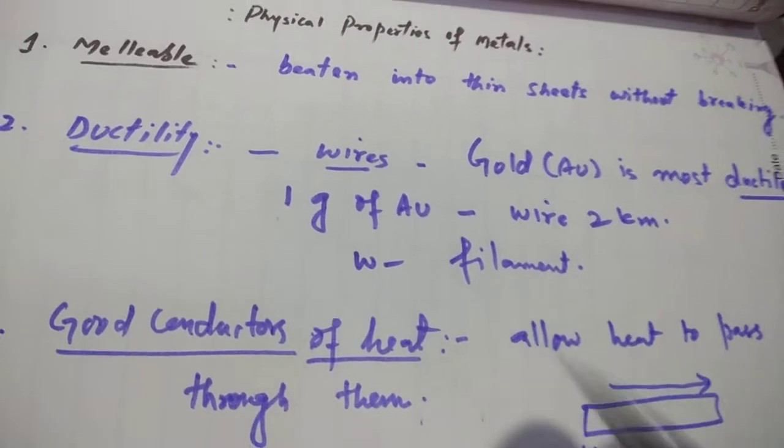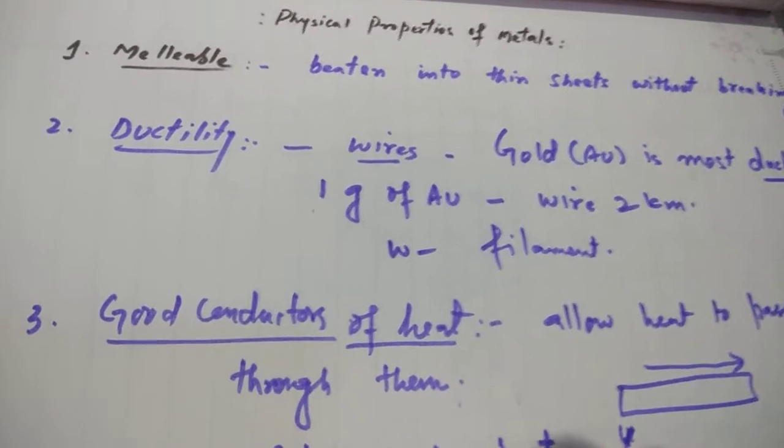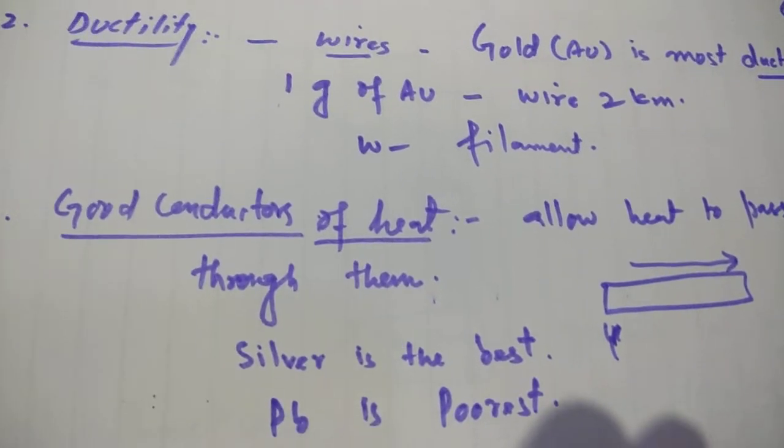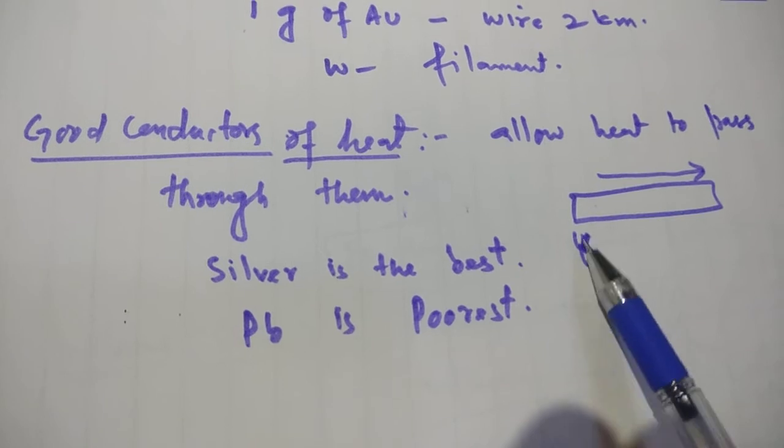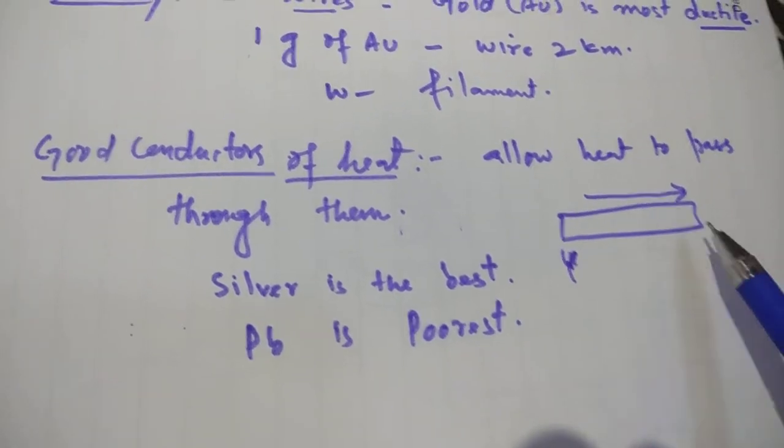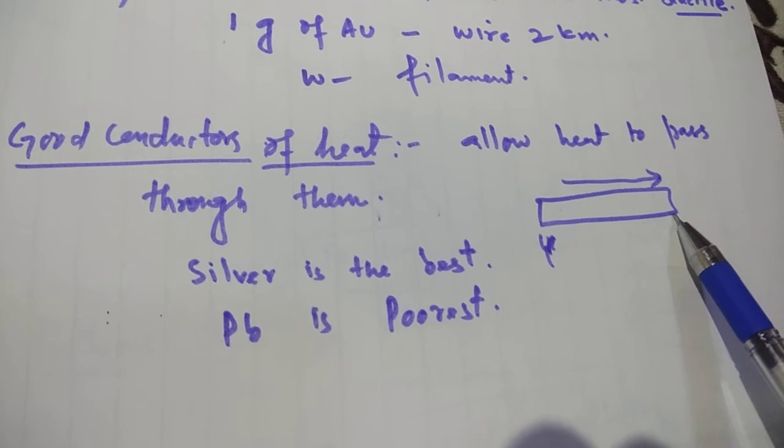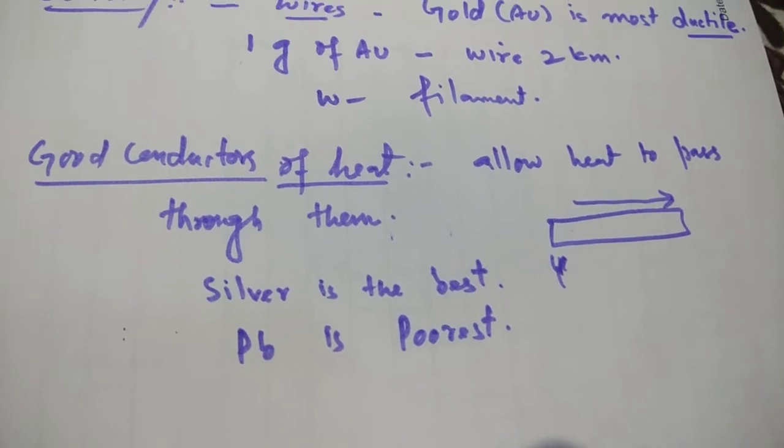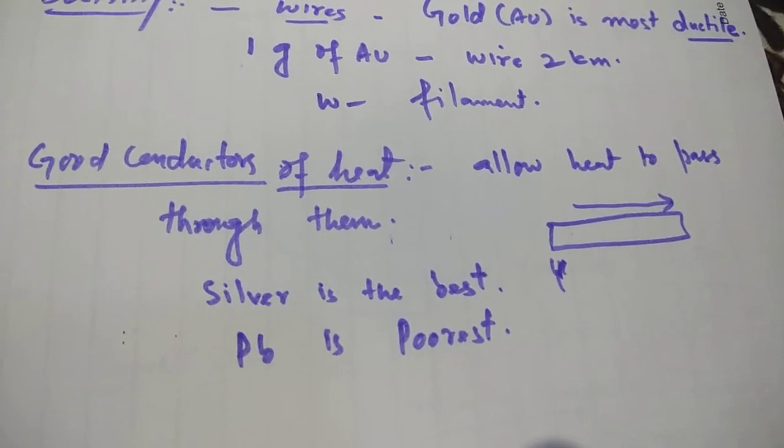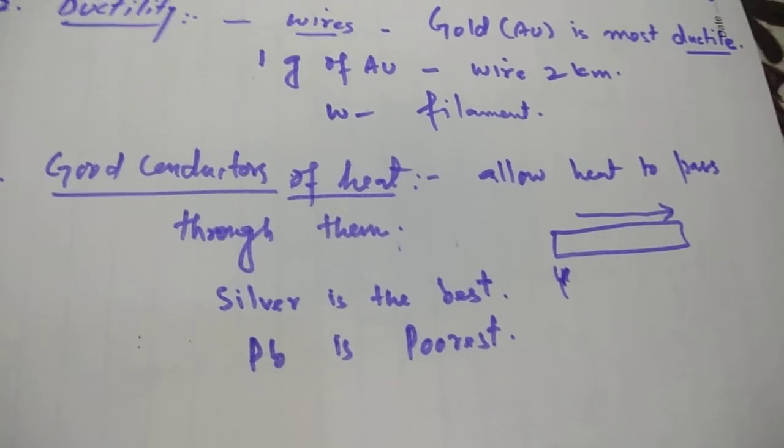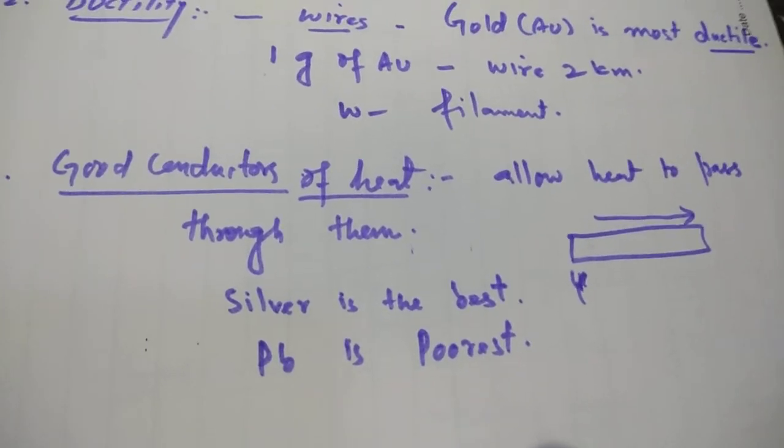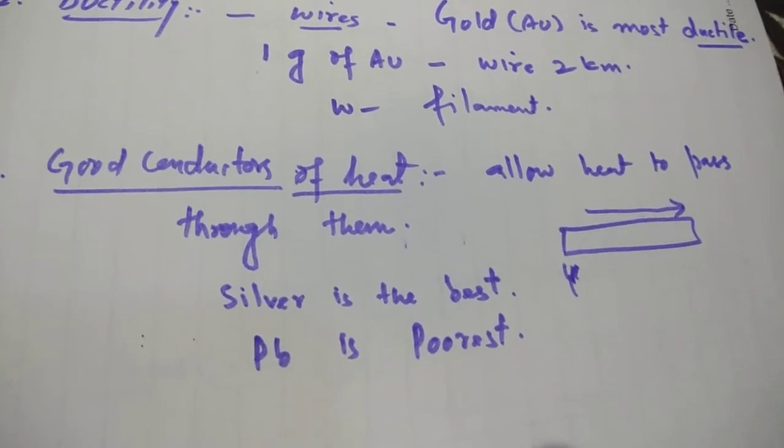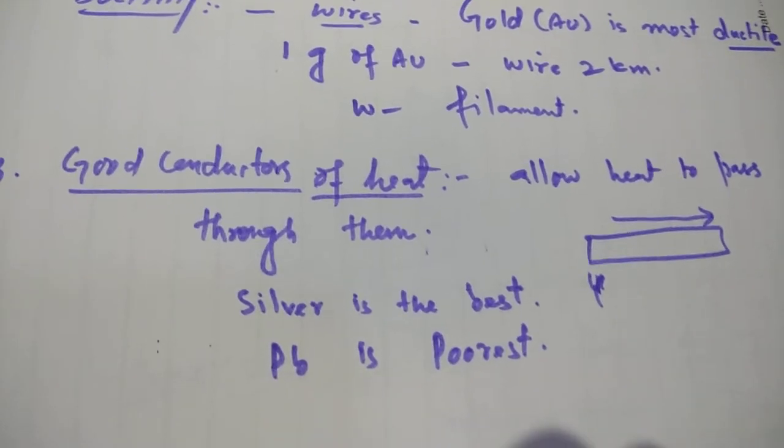Number third property is that the metals are good conductors of heat. Metals carry heat, that allows the heat to pass through them. That is why they are good conductors of heat. Silver is the best heat conductor. Lead is the poorest heat conductor. Metals usually are good conductors of heat.